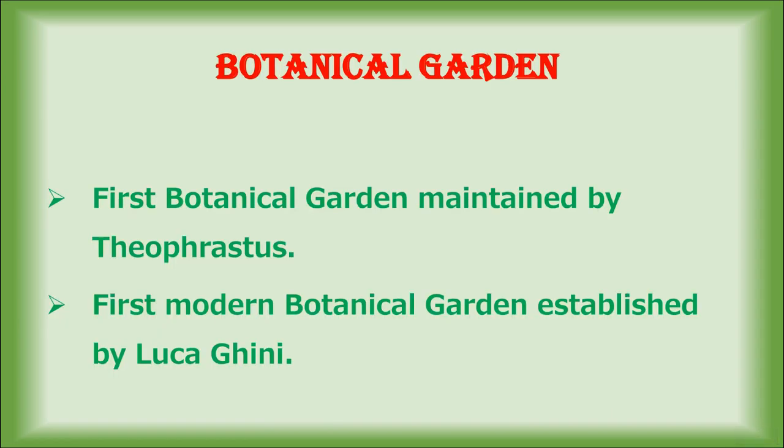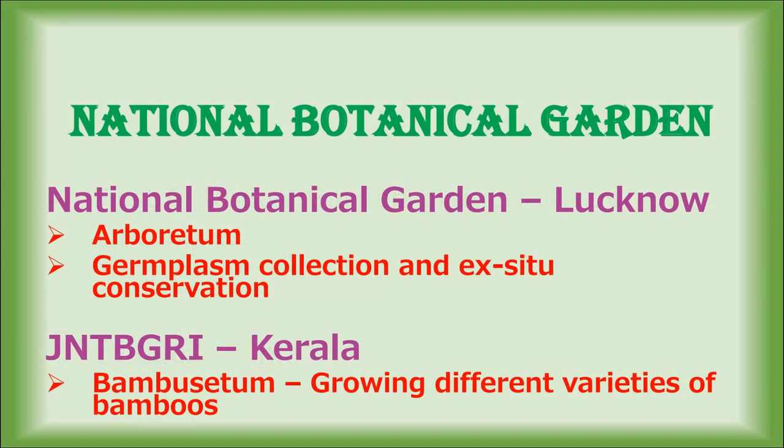The first botanical garden was maintained by Theophrastus. The first modern botanical garden was established by Luca Ghini. Important botanical gardens of India include the National Botanical Garden in Lucknow, which consists of an arboretum of nearly 500 species of trees. It was established in 1948 and is meant for germplasm collection and ex-situ conservation, meaning conservation outside its original place. The JNTBGRI botanical garden in Kerala was established in 1979 and is meant for conserving tropical plants and genetic resources. Its major attraction is the Bamboo Setum, where nearly 69 species of bamboos are grown.